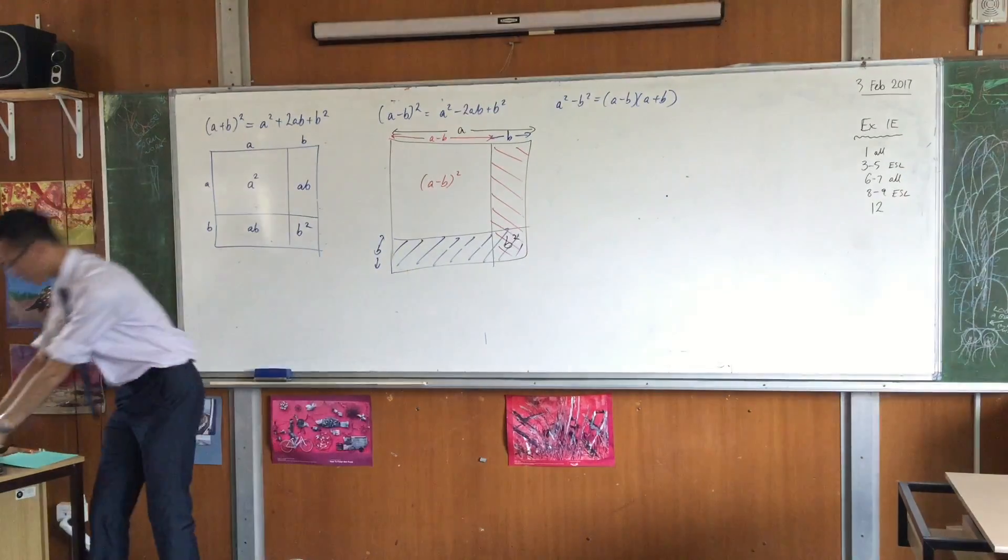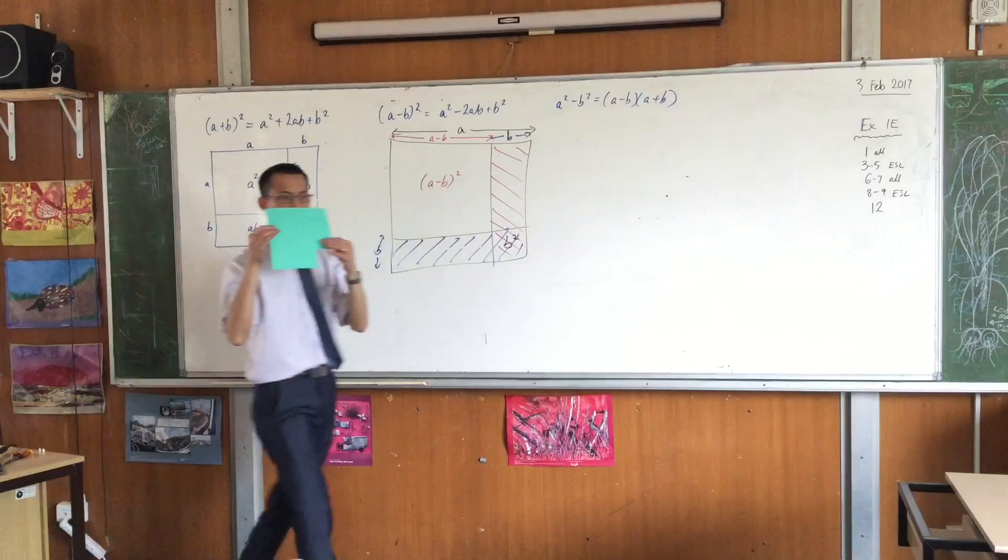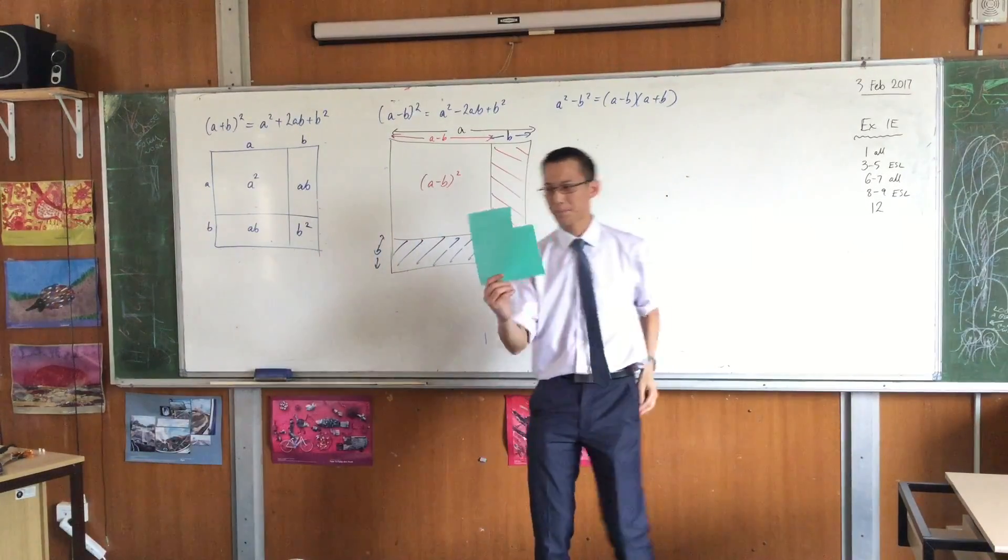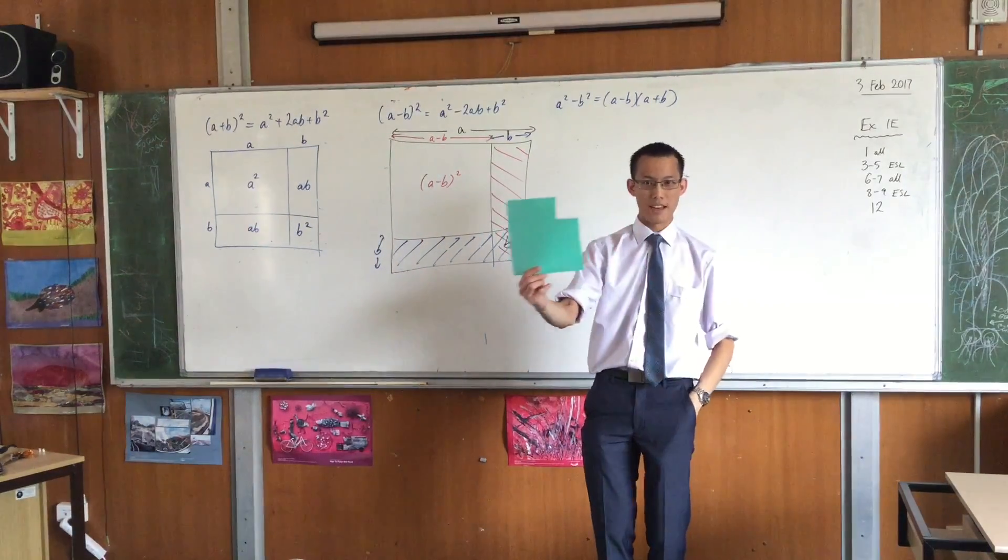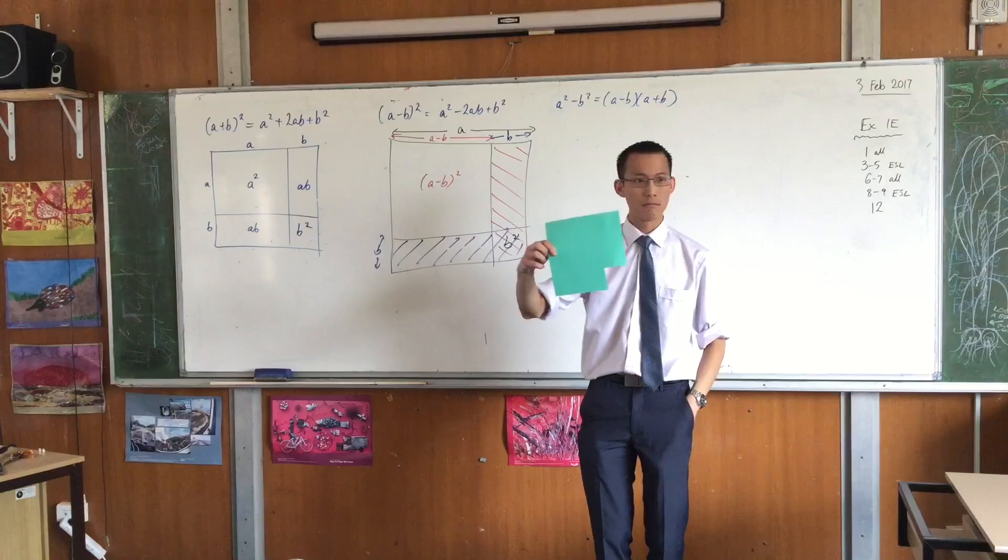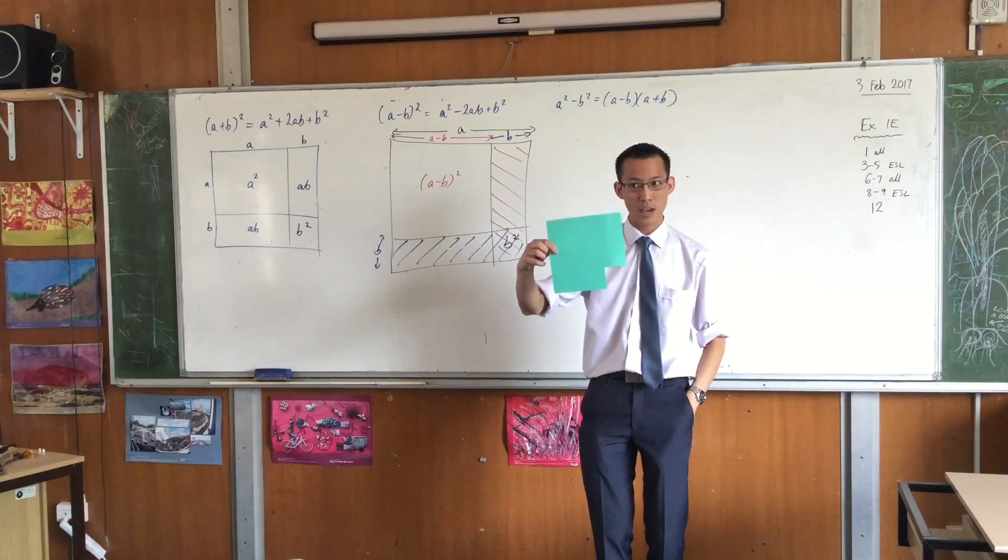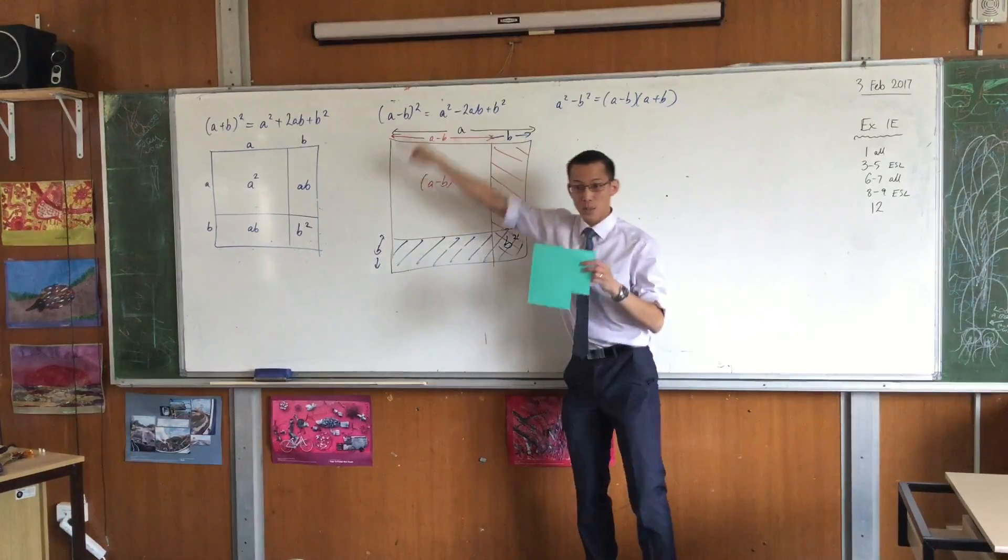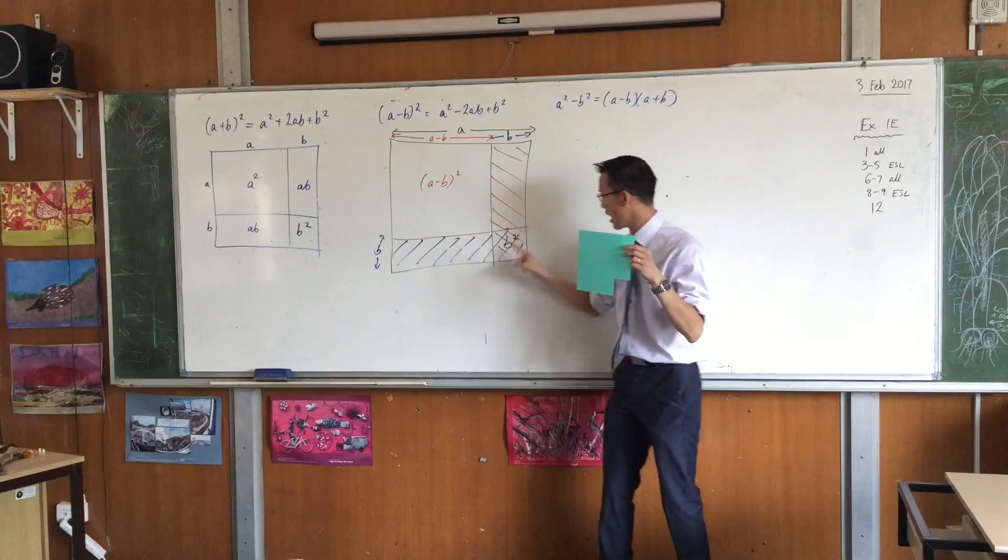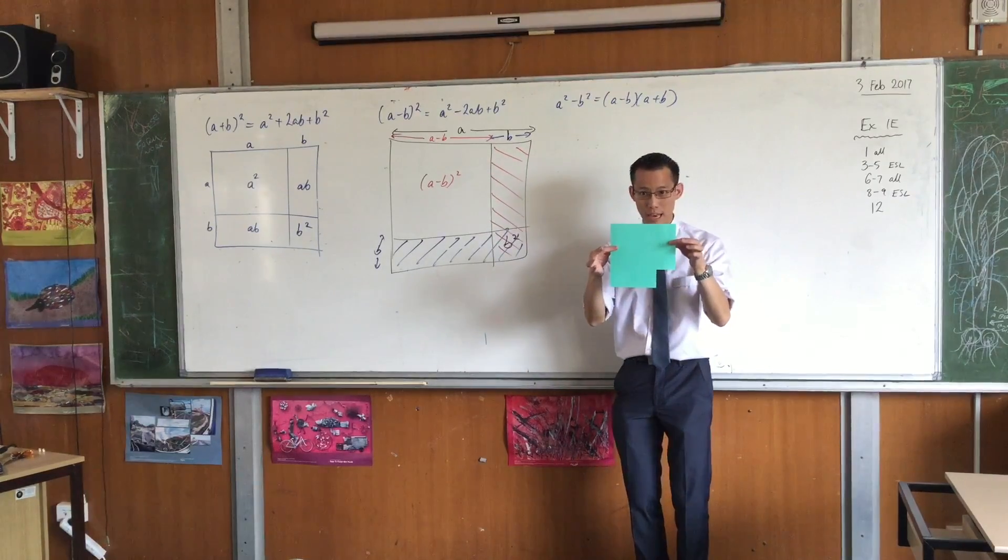Alright, this last one is even more beautiful. I need a bit of help. Look, think. This is my a squared minus b squared. Do you see it? Can you imagine this as a squared minus b squared? Look. It's a squared. Big thing. And I've cut out this part. Are you okay with that? Okay.